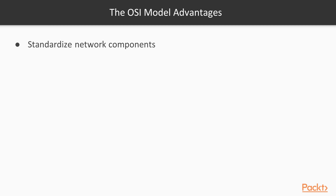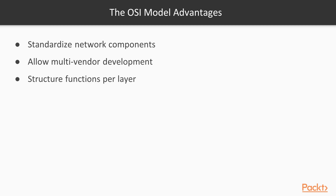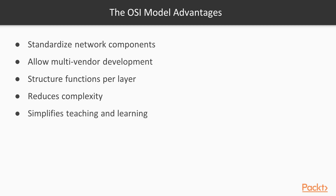The main advantages of the OSI model are that the standardization of network components allows multiple vendor development. It creates a common platform for software developers and hardware manufacturers that encourages the creation of networking products that can communicate with each other. It structures very well the functions particular to each layer. It as well reduces complexity and accelerates evolution. And finally, it simplifies teaching and learning.